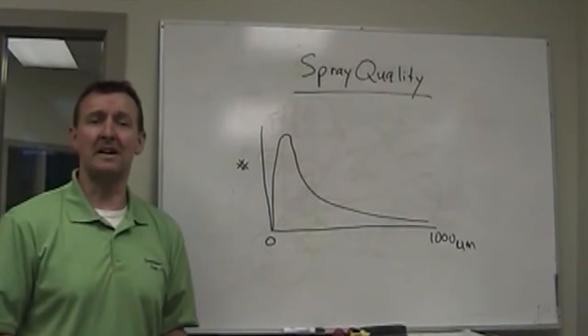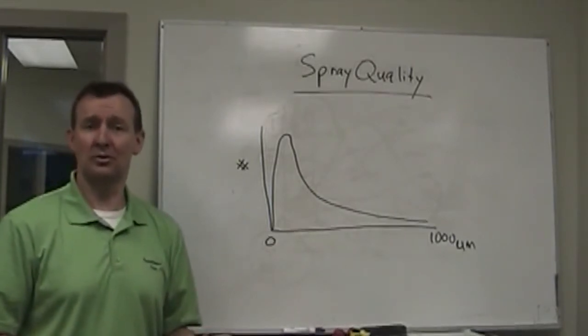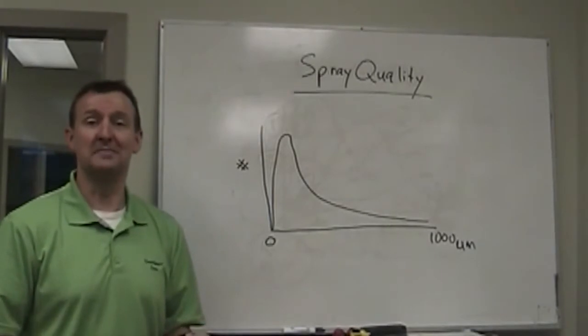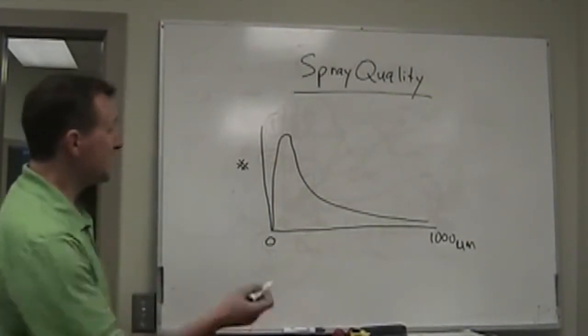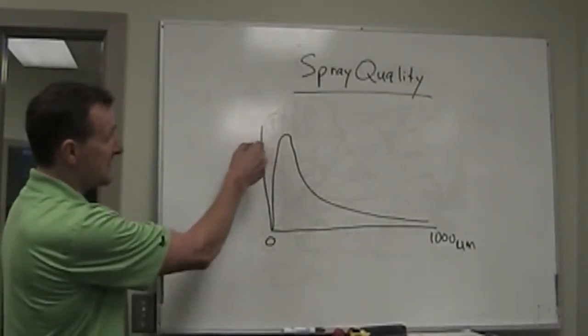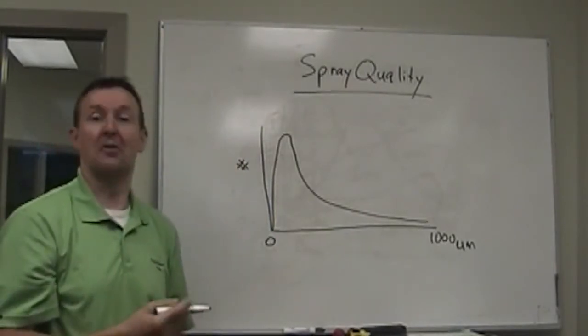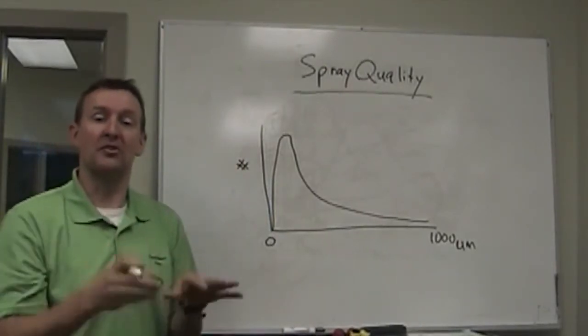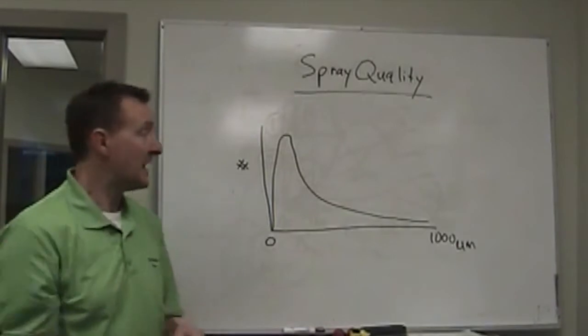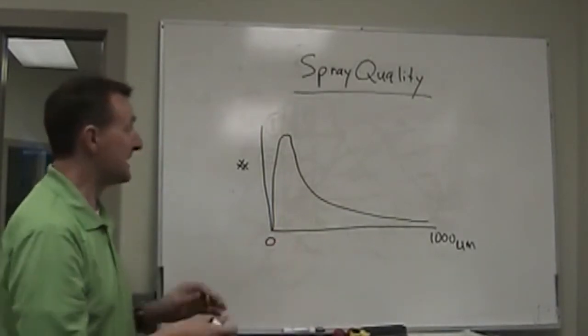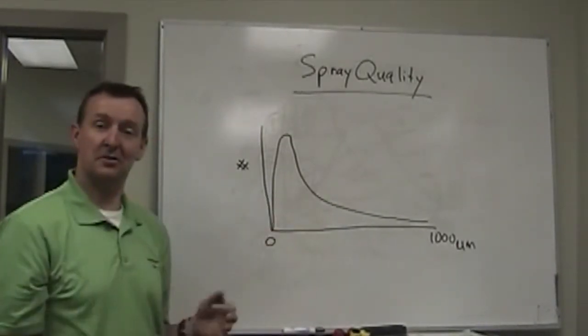This is true of every nozzle, be it a hollow cone, a flat fan, an air induction tip, a pre-orifice tip, it really doesn't matter, they all look the same. The only thing that changes really is the actual number near the top here. Obviously with coarser sprays the overall number of drops is smaller and for finer sprays the opposite, but the relative shape of the curve is always the same.